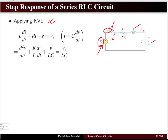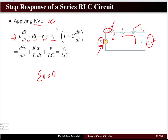Since the resistor, inductor, and capacitor are all in series, the current will be the same throughout the network. We apply Kirchhoff's Voltage Law: the algebraic sum of all voltages in a closed mesh equals zero. The voltage drop across the inductor is L·di/dt, across the resistor is i·R by Ohm's law, and the capacitor voltage V equals Vs. When we discussed the natural response, the right-hand side was zero.